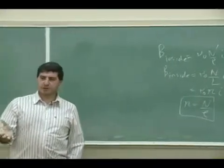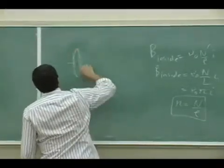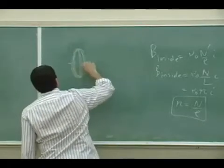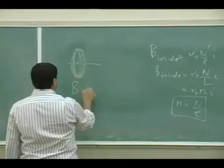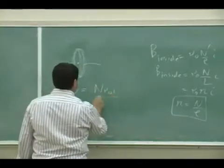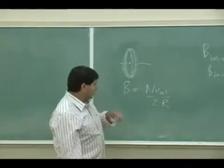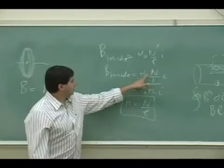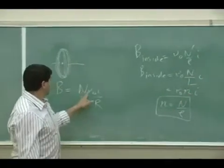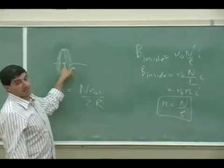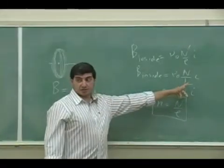This formula resembles the equation for a circular coil with N loops. Recall the magnetic field at the center of N circular loops is N μ₀ I over 2r. Comparing: the solenoid formula has N μ₀ I over L where L is the length of the solenoid, while the coil formula has N μ₀ I over 2r where r is the radius.